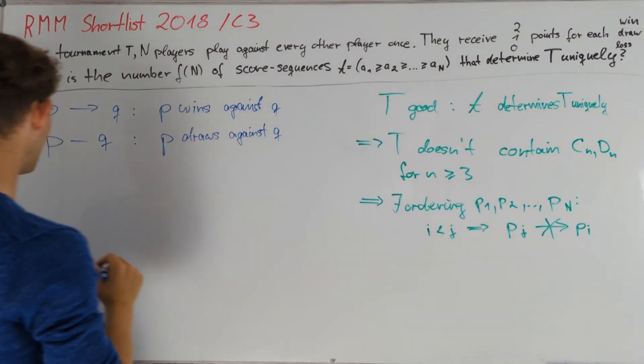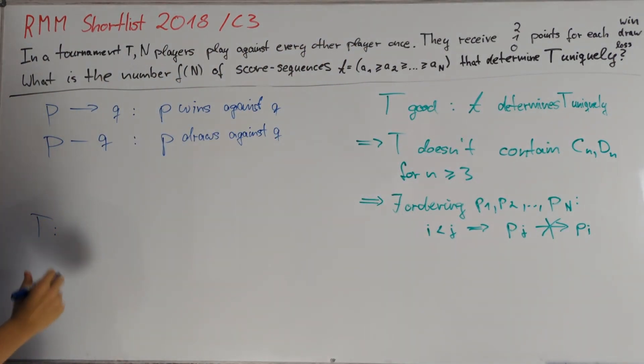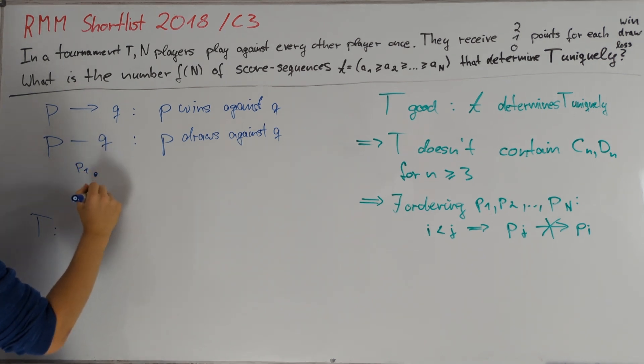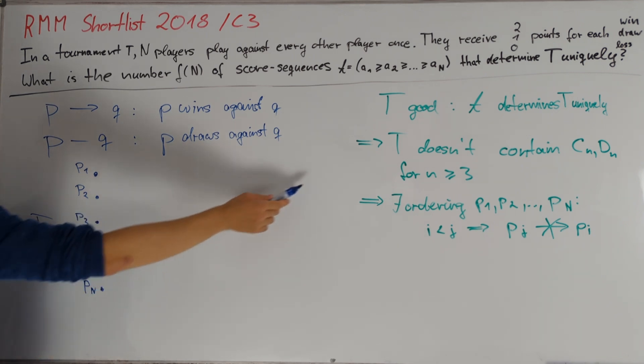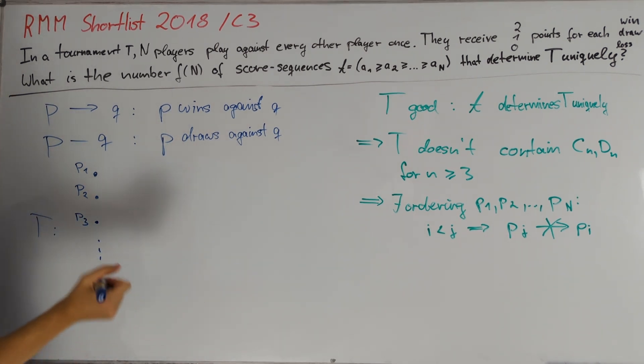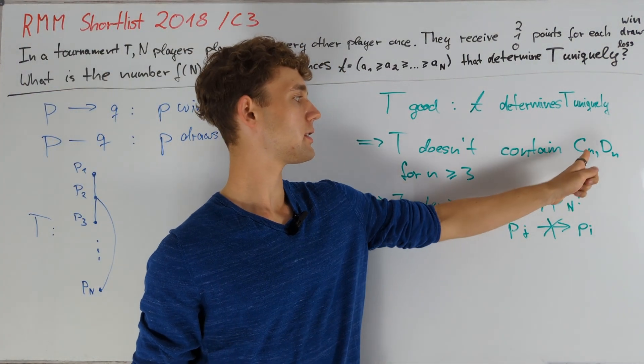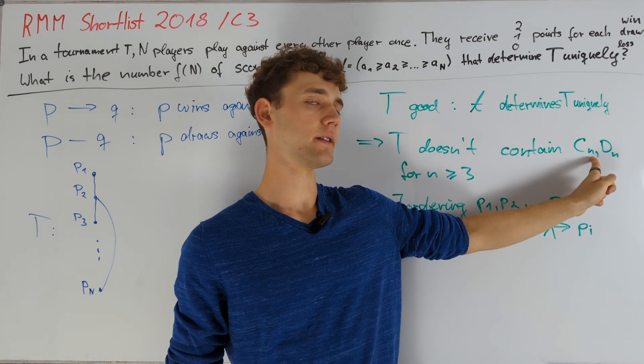Now I will draw a new picture of T where we can directly label our vertices like this. So we have P1, P2 and so on up to Pn. Since our ordering has this nice property, we only have to draw in edges for every draw, because by this the outcomes of all other games are already detailed. This undirected graph will be a forest because we recall that T also doesn't contain an undirected cycle Cn.